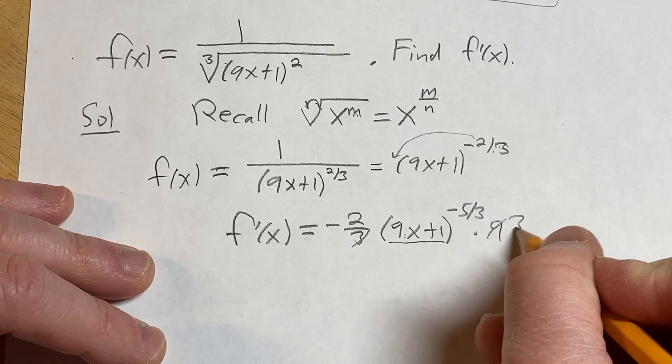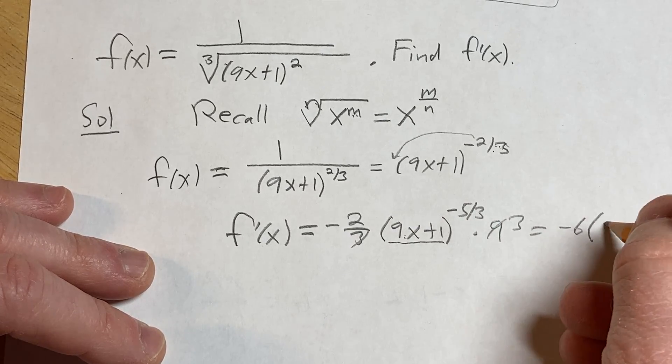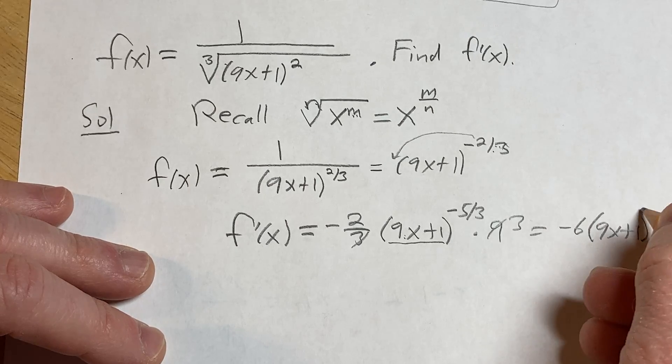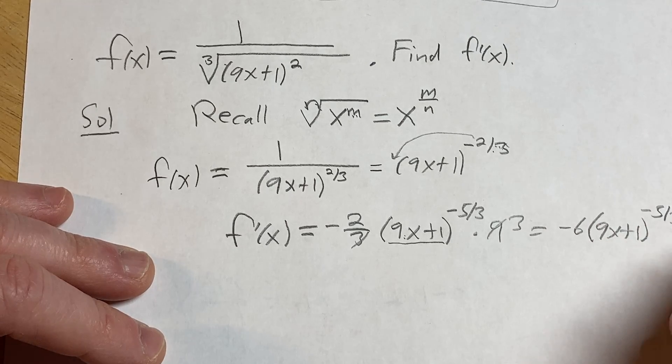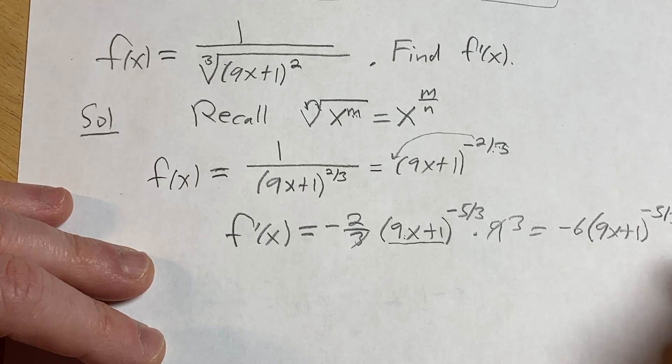3 goes into 9 three times, so we end up with negative 6 times (9x+1) to the -5/3. And that would be the final answer.